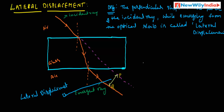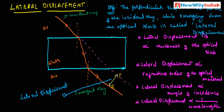What are the conditions of lateral displacement? The lateral displacement is directly proportional to the thickness of the optical slab, directly proportional to the refractive index of the optical material, and directly proportional to the angle of incidence.